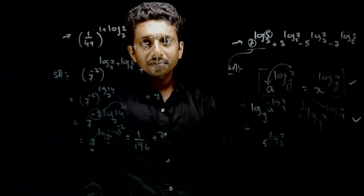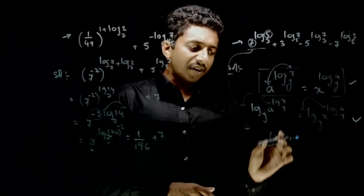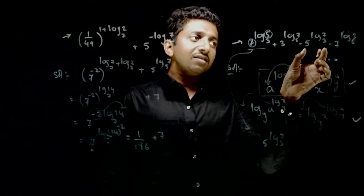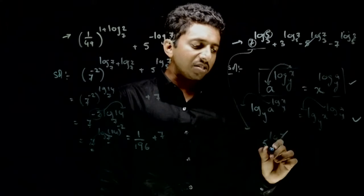Fahidha kya ho? Throda seh carefully dhekhiye. So yehaa this has become 5 power log 7 to the base 3 and this is minus 5 power log 7 to the base 3. So this term and this term are getting cancelled.